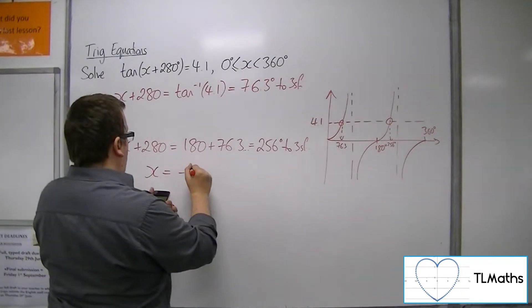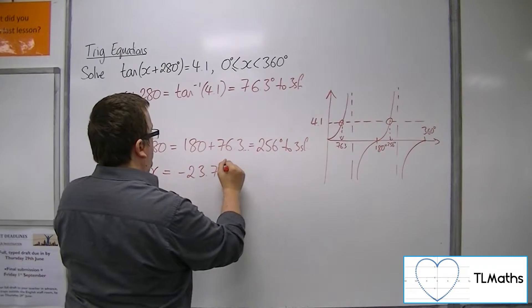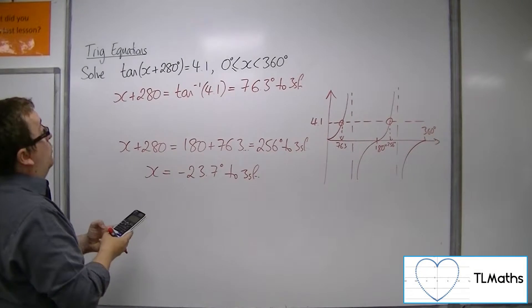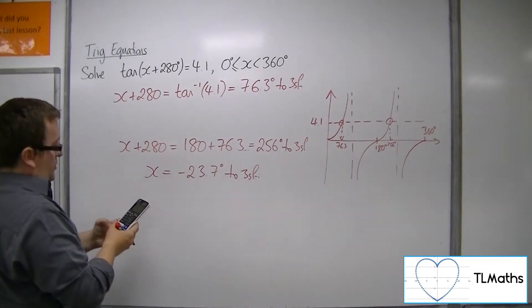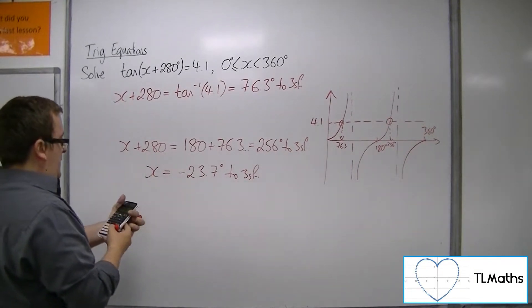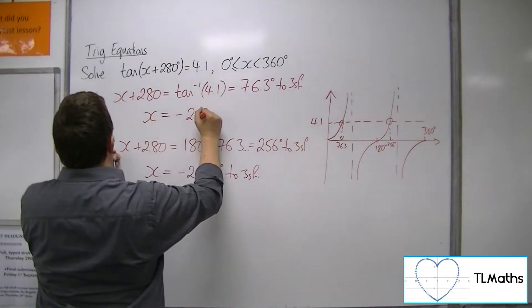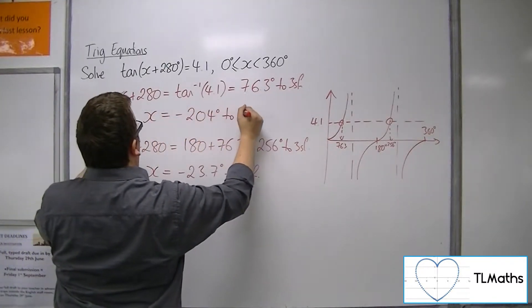So, we get minus 23.7 degrees to 3 sig fig there. And then inverse tan 4.1, take away 280, is minus 204 degrees to 3 sig fig.